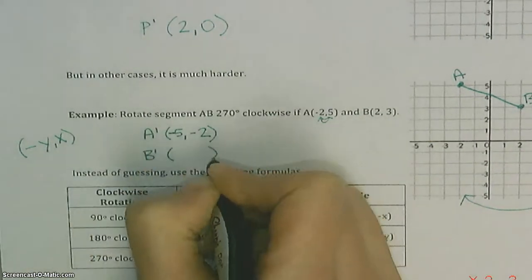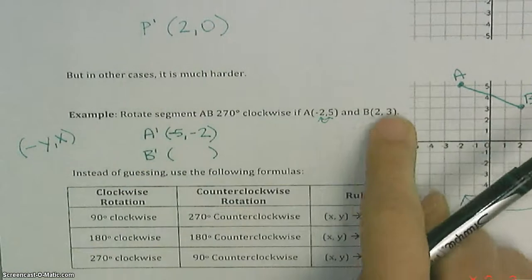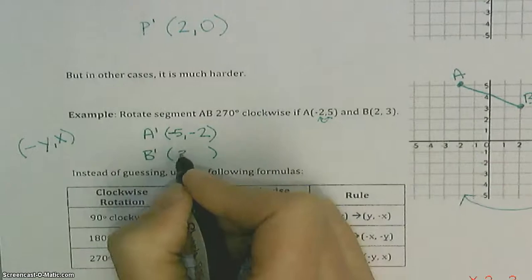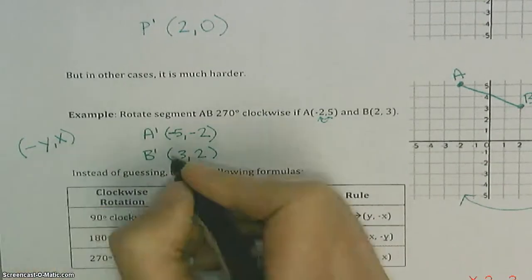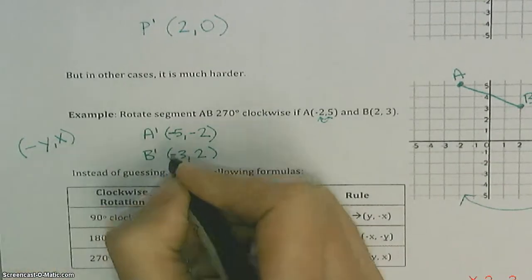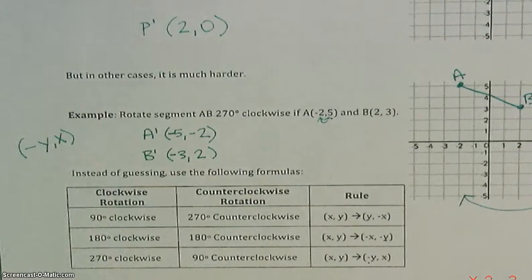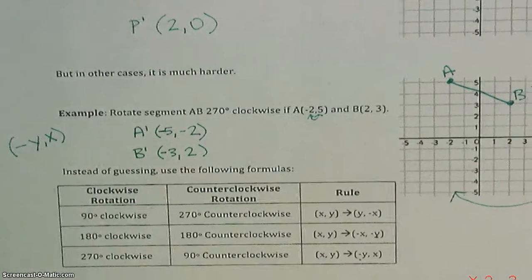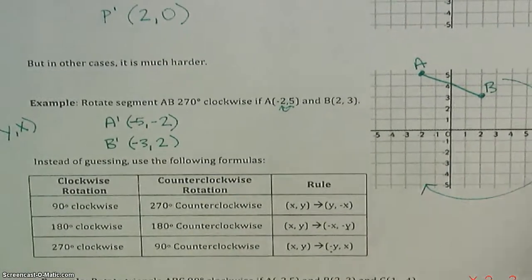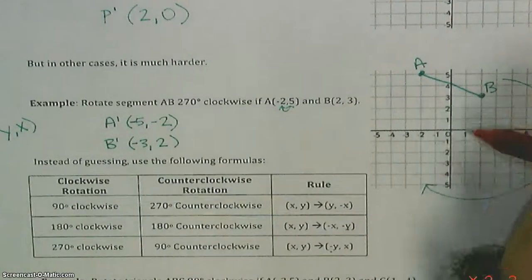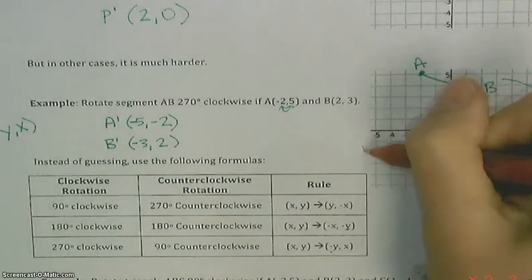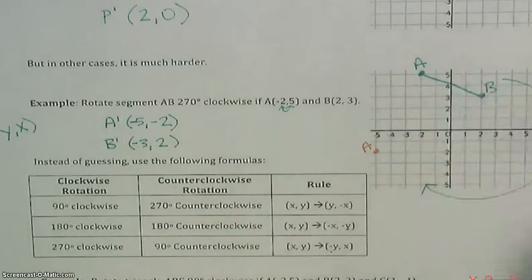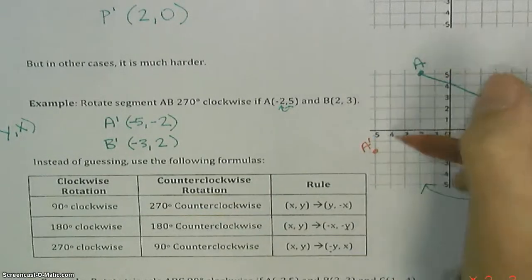For B prime, we do the same thing — switch 3 and 2, then change the sign of the one in the front. So B prime ends up at (−3, 2). That's where segment AB is going.